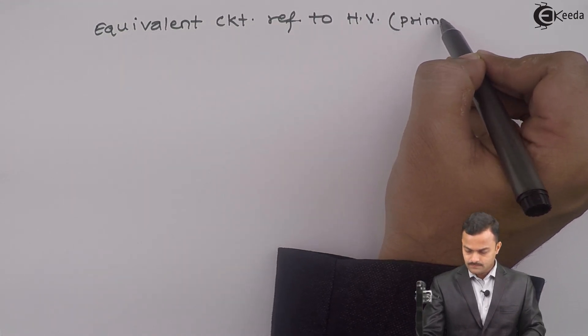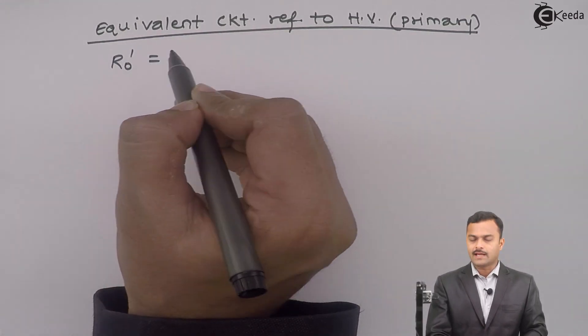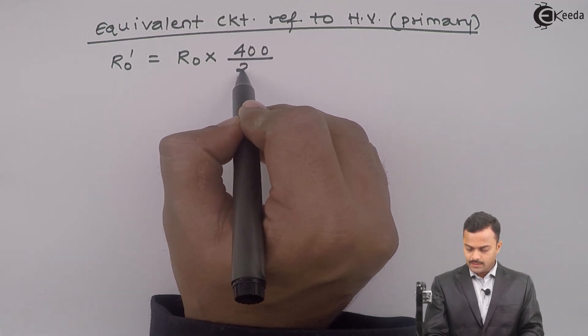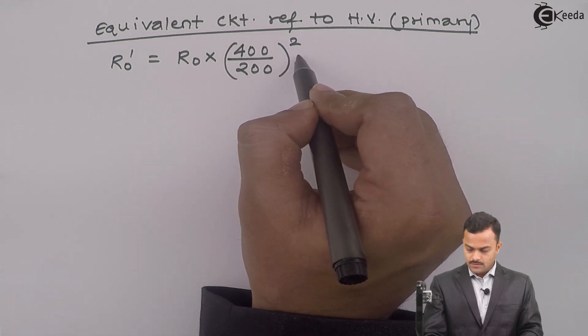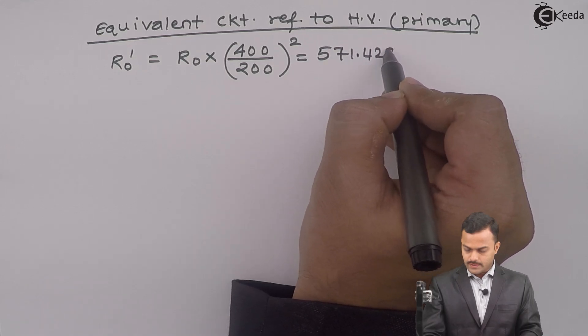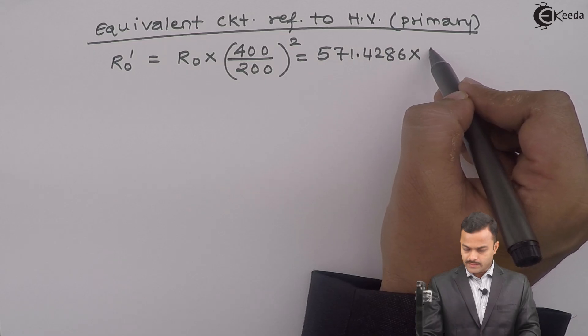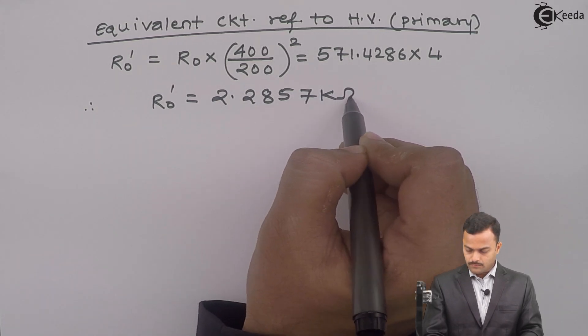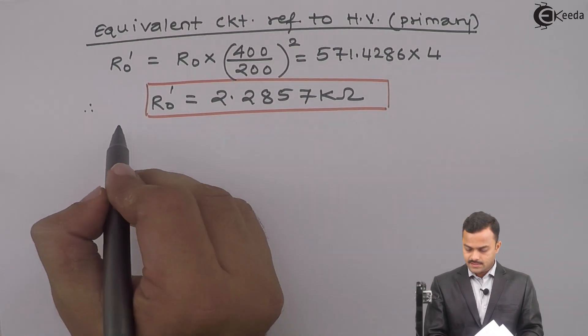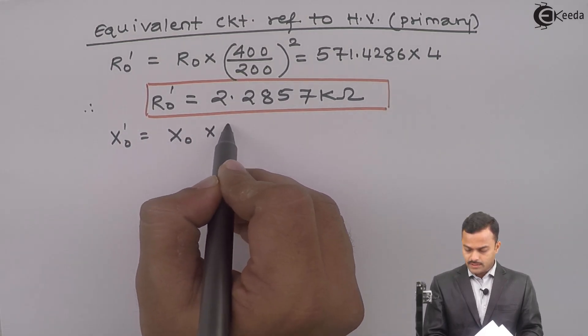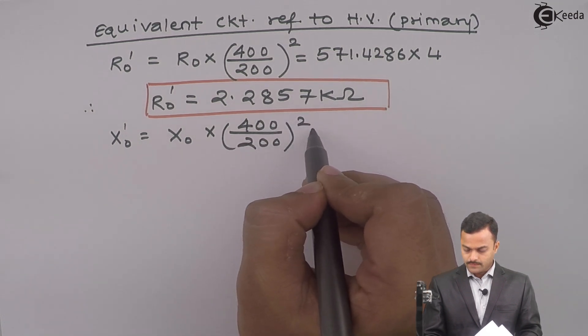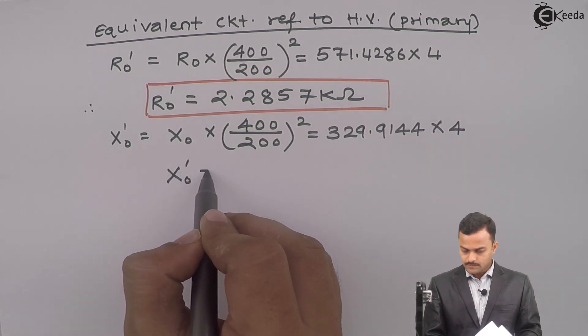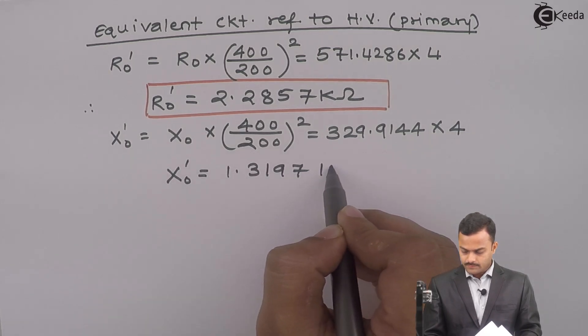Equivalent circuit referred to HV side will be like this. And HV side is our primary side. R0 dash we need to calculate. It is R0 multiplied by HV side voltage divided by LV side voltage square. This is equal to 571.4286 multiplied by 2 square is 4. So R0 dash you will get 2.2857 kilo ohm. Similarly, X0 dash equal to X0 multiplied by 400 upon 200 square which is equal to 329.9144 multiplied by 4. The answer will be 1.3197 kilo ohm.